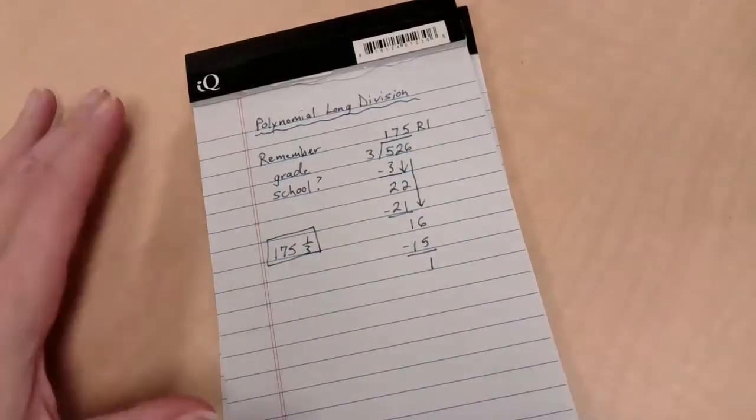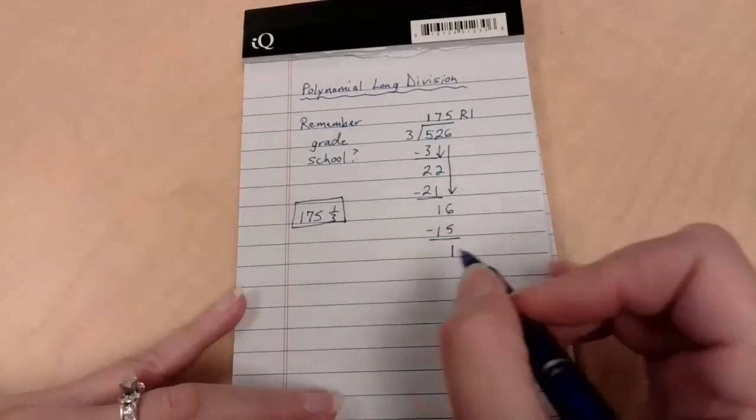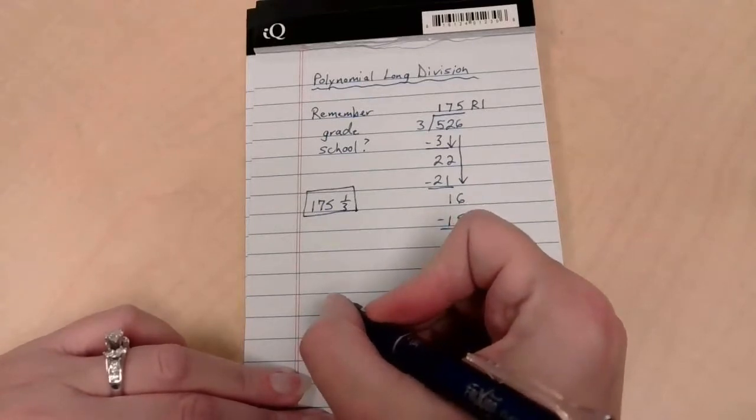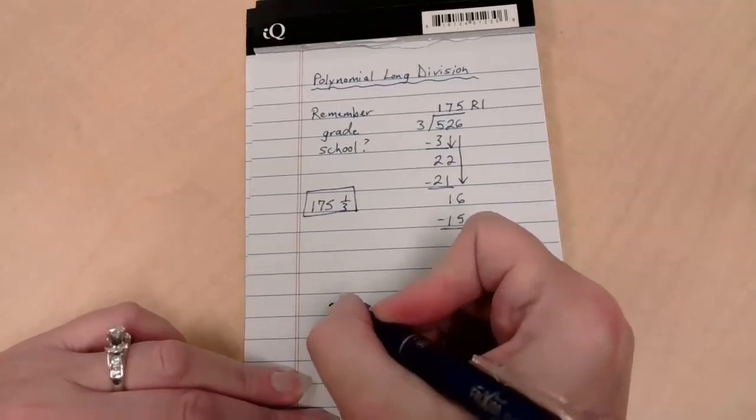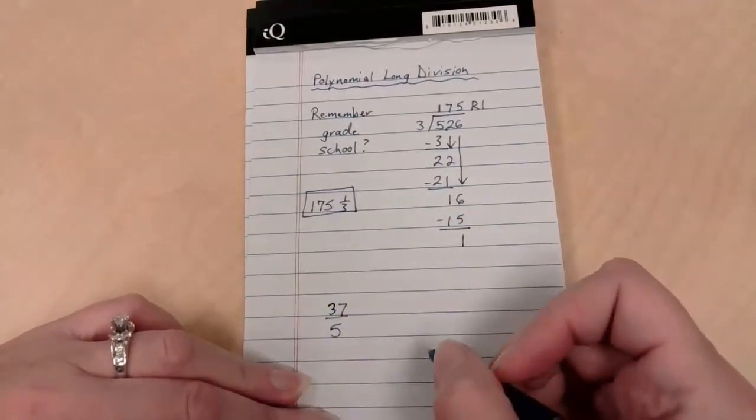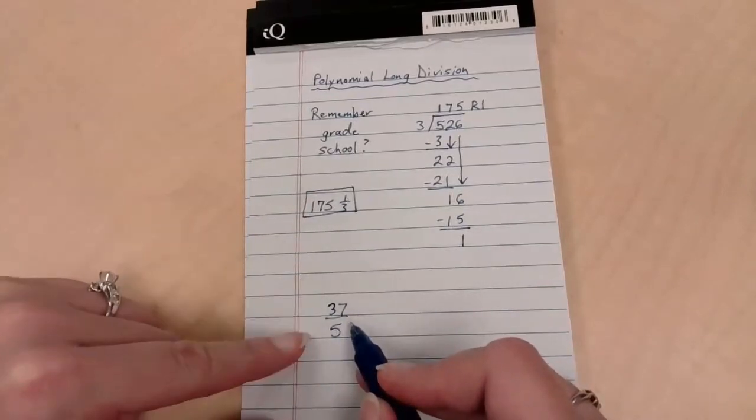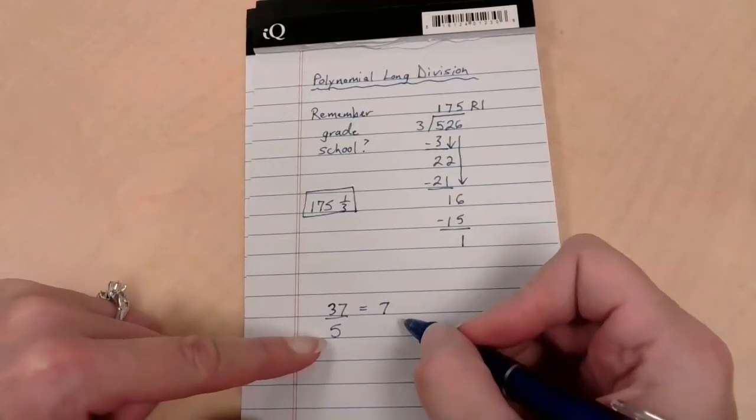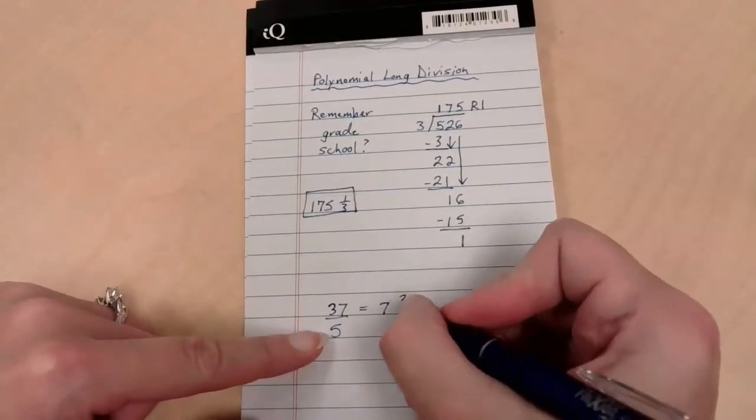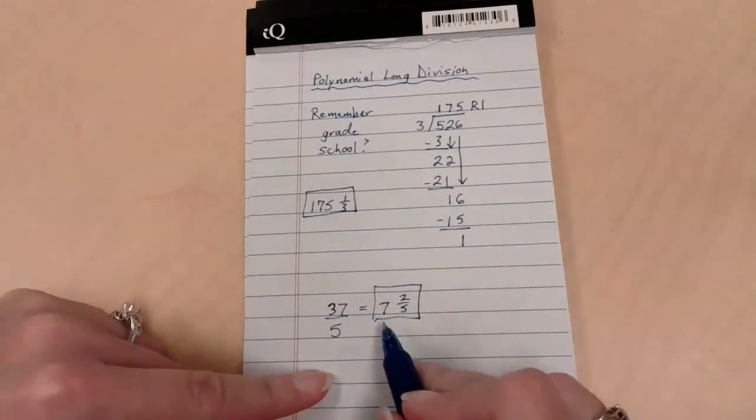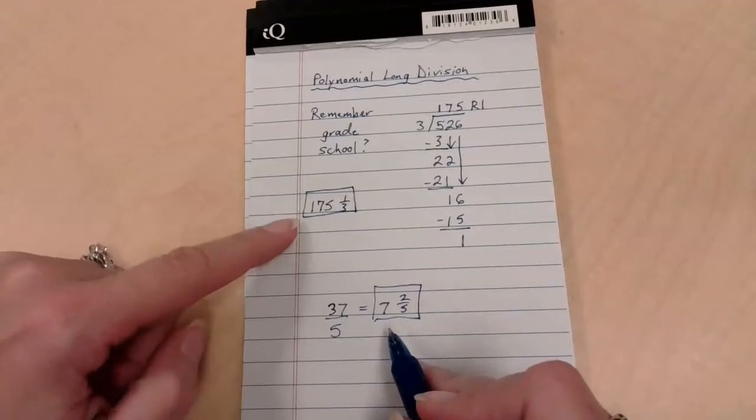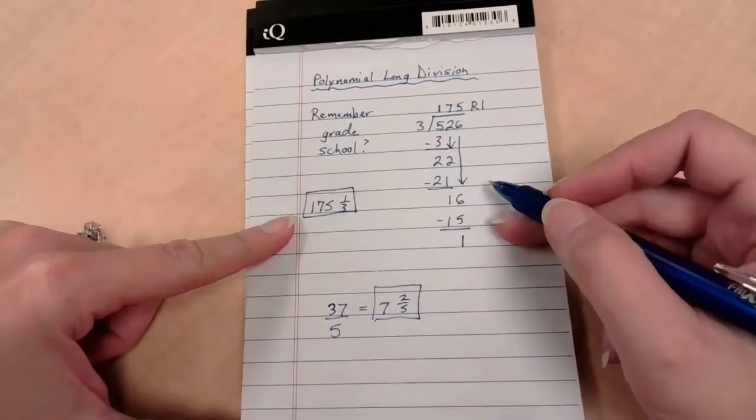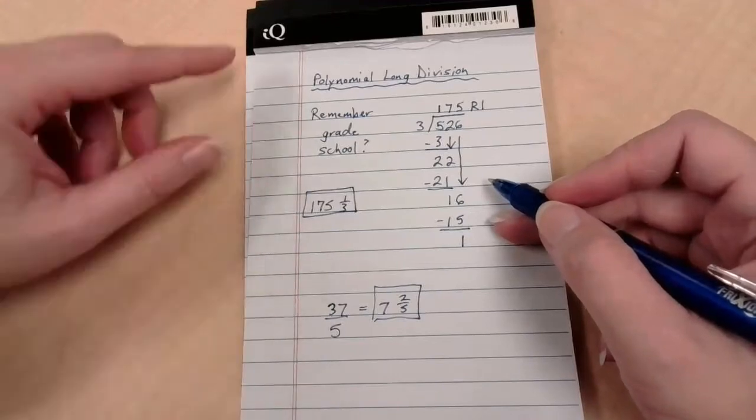So what is our answer? You may have written it as 175 remainder 1. Can I offer an alternate way to write this solution though? It went in 175 times, and a remainder of 1 over my divisor of 3. This is 175 and 1 third. Basically what I'm doing here is just, think about if I just do, let's make up numbers for a second, 37 over 5. This is an improper fraction. How would I write that as a mixed number? This is the same kind of idea.